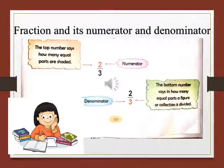The top number is numerator. The bottom number says in how many equal parts a figure or collection is divided. So that bottom number is called denominator. D means down.